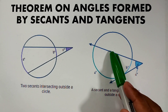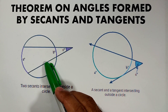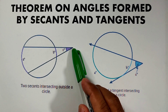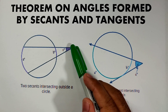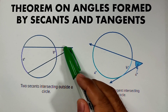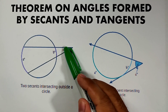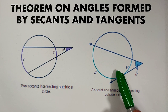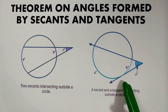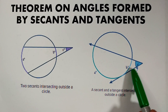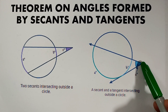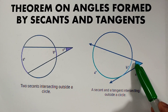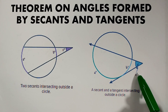As you can see, we have two figures here. In the first figure, we have two secants intersecting outside the circle, and it forms an angle. This angle has a measure of C degrees. In the next figure, we have a secant and a tangent intersecting outside of the circle, and it also forms an angle which measures C degrees.